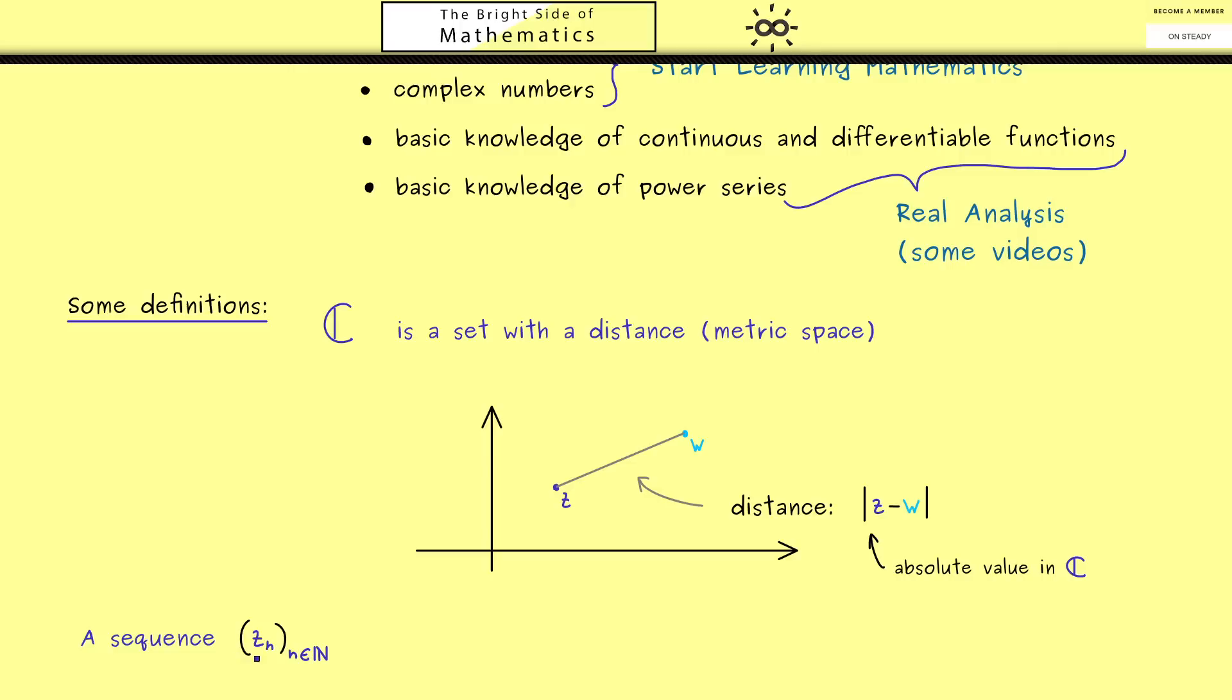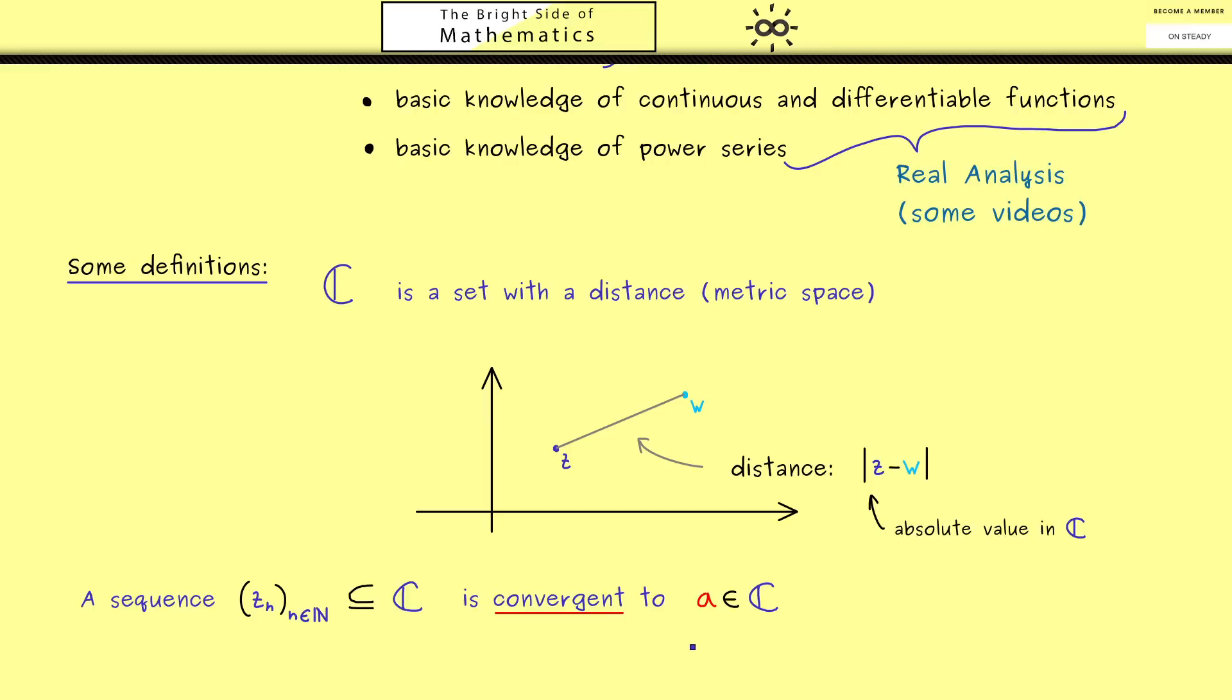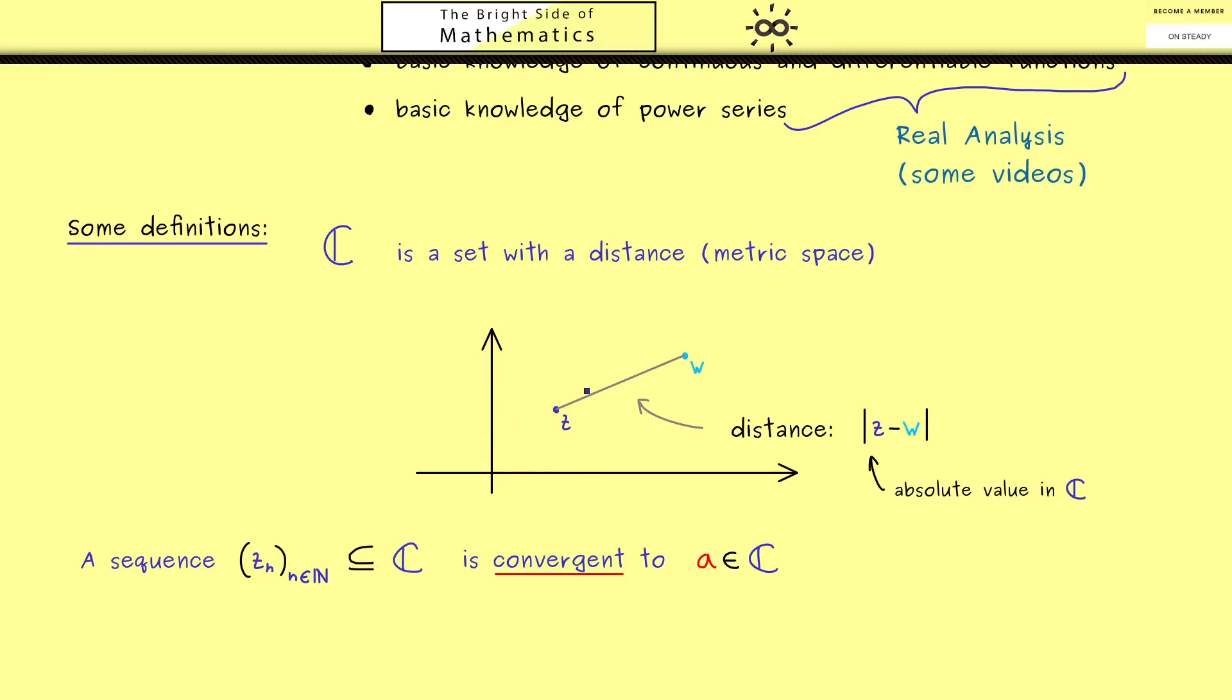Now we are able to talk about sequences of complex numbers and convergent sequences. A sequence of complex numbers is denoted by z_n, where n goes through all natural numbers. Formally we have a map from the natural numbers into the complex numbers C. Now we can define what it means that this sequence is convergent to a fixed complex number a. It just means that the distance we can measure between z_n and a gets smaller and smaller until it reaches 0 in the limit.